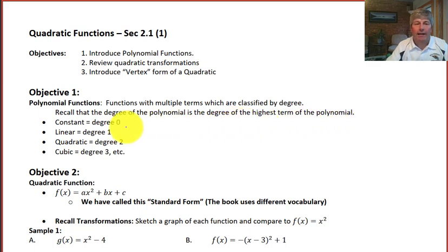And recall that a degree of polynomial is the degree of the highest term of the polynomial. So a constant has degree zero, where a linear term has degree one, y equals mx plus b, the coefficient or the exponent on our x is one. A quadratic is degree two, a cubic is degree three, and so forth.